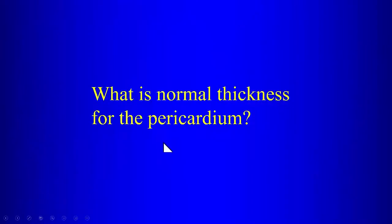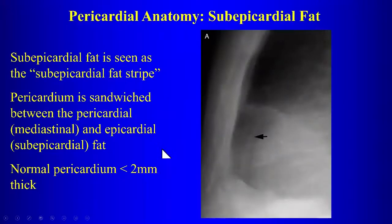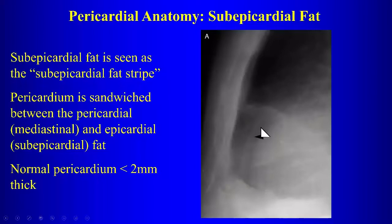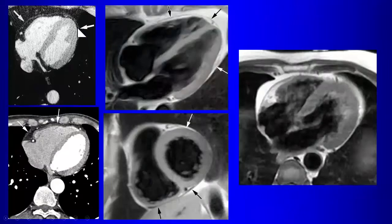The normal thickness for the pericardium is about 2 millimeters. Two to 4 millimeters is a gray area; greater than 4 is definitely considered abnormal. Sometimes you can actually see the pericardium on a lateral chest radiograph — that thin stripe is the normal pericardium. If you have enough epicardial fat and mediastinal fat, that will outline it. Normally it's 2 millimeters or less. It's also easier to see over the anterior border of the heart.